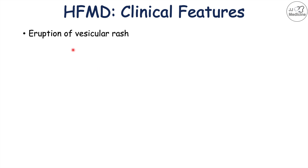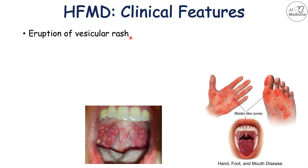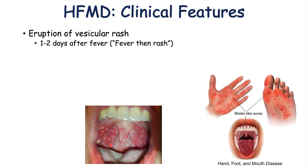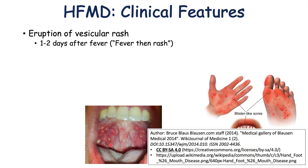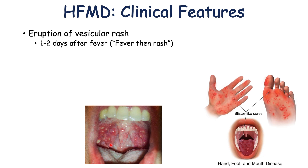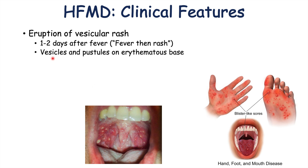After that 12 to 36 hour prodrome, we start to see an eruption of a vesicular rash. There can be blister-like sores on the hands, the feet, and the mouth — particularly in the posterior mouth. This occurs one to two days after the fever, so it's important to think: fever, then rash. The rash occurs as vesicles and pustules on an erythematous base.